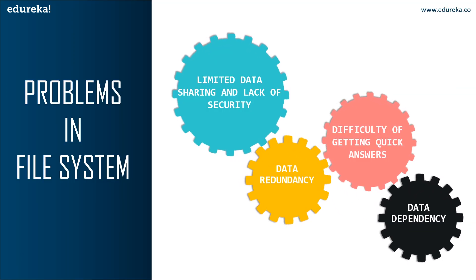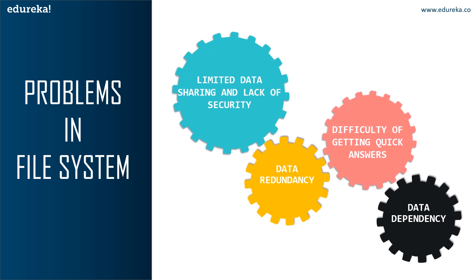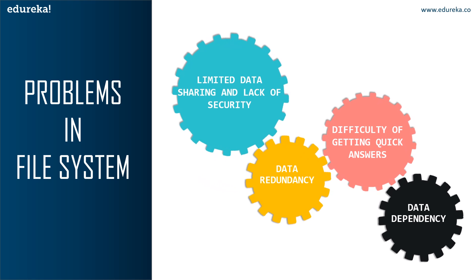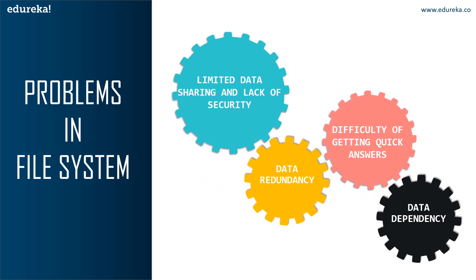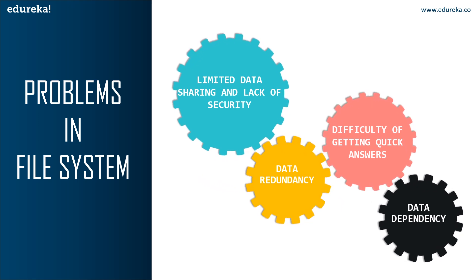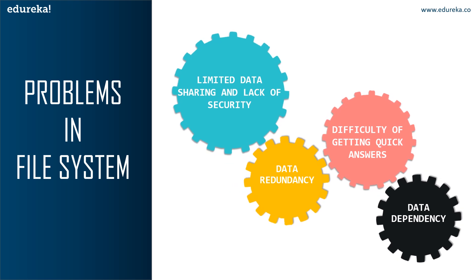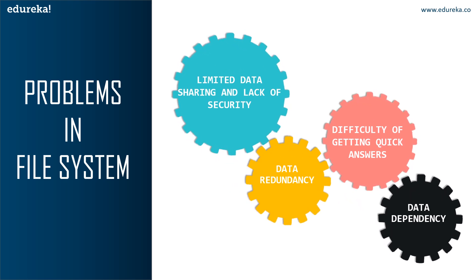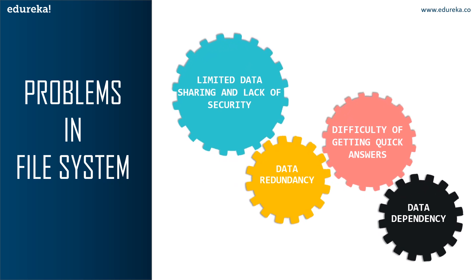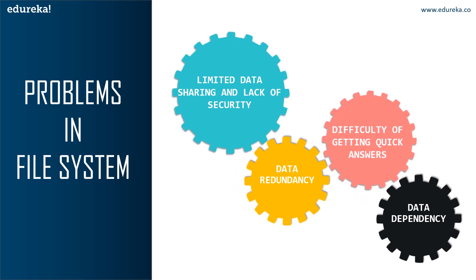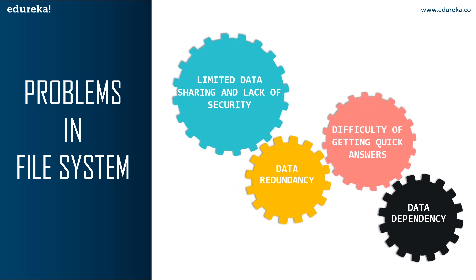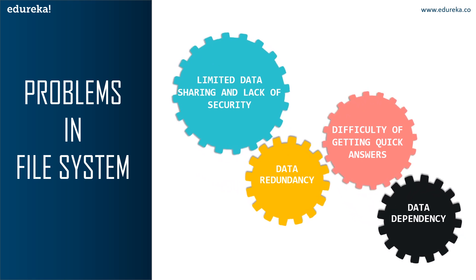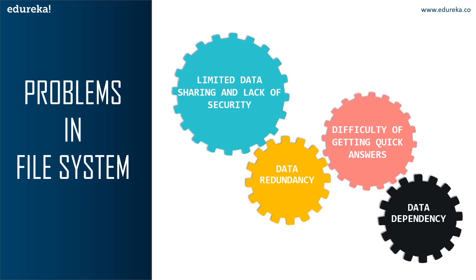Let's look at some of the problems of file system. The first problem is data redundancy. When we store similar data in different locations of a computer, data gets duplicated, and this leads to data redundancy. This increases the storage size and also leads to failure of security features. Because of this, the file system is highly vulnerable in nature. Data redundancy will cost the user not only in terms of security, but also economically.